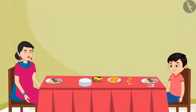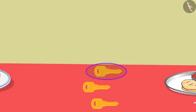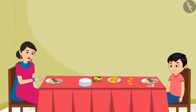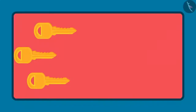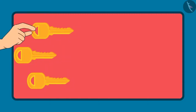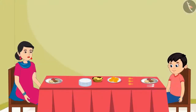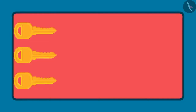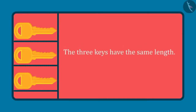Mummy then shows Chotu three keys — the room key, Chotu's room key, and the house key. She asks him to identify the longest and shortest key. Chotu says, 'By looking at them, it seems like this key is the longest and this key is the shortest. But before answering, I will keep all three keys together so that one end is aligned.' After doing so, Chotu concludes, 'The length of all three is the same — that's why neither of them is long or short.'